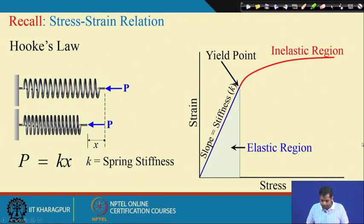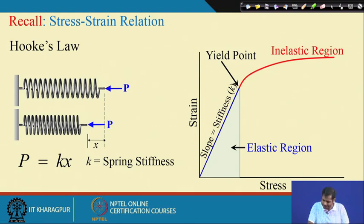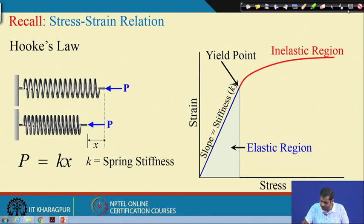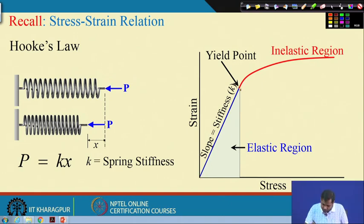The stress-strain relation: if you recall Hooke's law for a spring subjected to an axial load p with displacement x, the relation is p = k·x, where k is the spring stiffness.